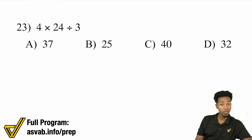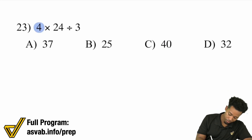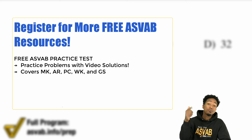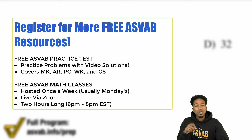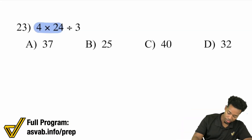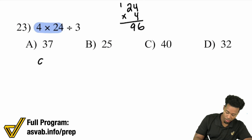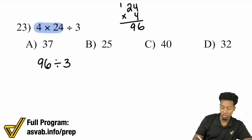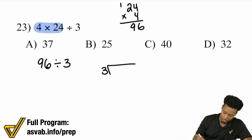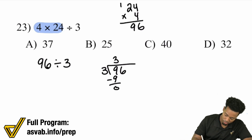Number 23: 4 times 24 divided by 3. We're going to go left to right — 4 times 24. If you need to write this out on the side, go ahead: 4 times 4 is 16, 2 times 4 is 8, carry the 1 is 9, so we end up having 96 divided by 3. If you've watched my mental math videos, you know that's 32. 3 goes into 9 three times, 3 goes into 6 twice — that's 32.